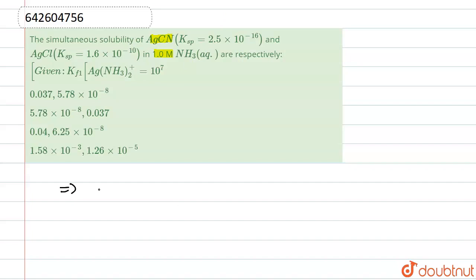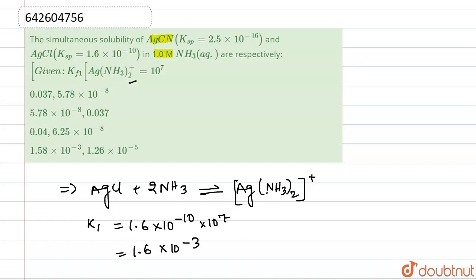Let us write our reaction first. The reaction we have, AgCl plus 2 NH3 will give Ag(NH3)2 plus. From here we have Kf1 or K1, this equals to 1.6 into 10 to the power minus 10 into 10 to the power 7. So this is actually the value of K1, this will come at 1.6 into 10 to the power minus 3.